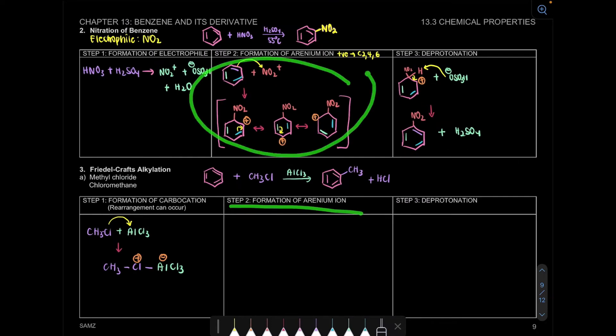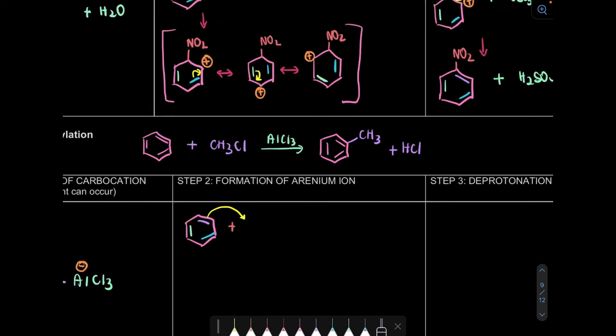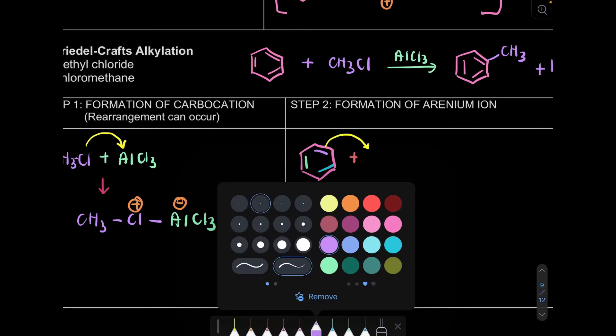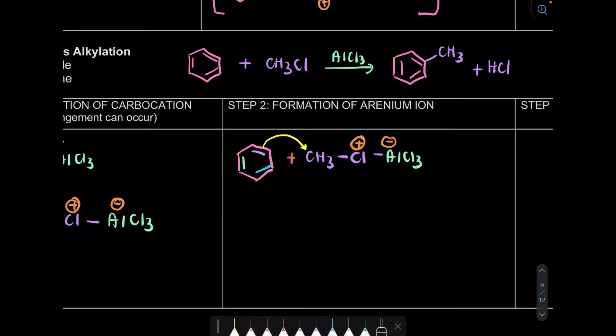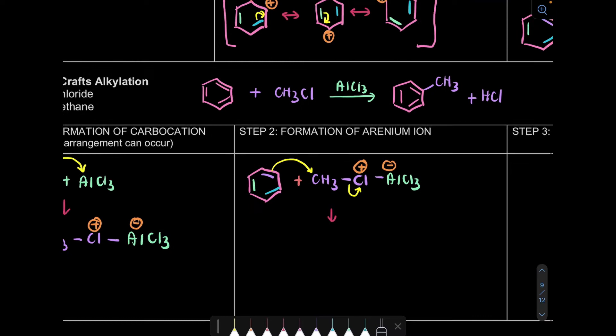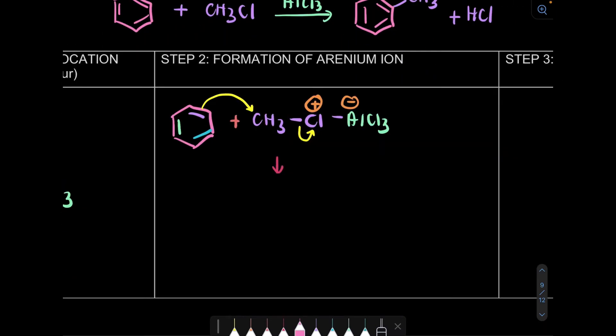Step 2, formation of arenium ion, you are going to draw the resonance. So what happened here, we'll react with our complex. Don't forget all the charges that are present. So because CH3 is the poor electron, this will form our product. So we want CH3 only. So it will break the bond going to chlorine because it's more electronegative. So we'll draw three of our benzene structures, and attached to it is CH3 on the same carbon.